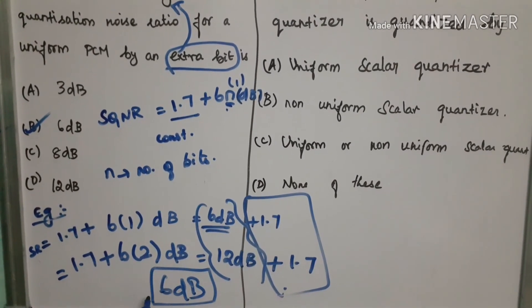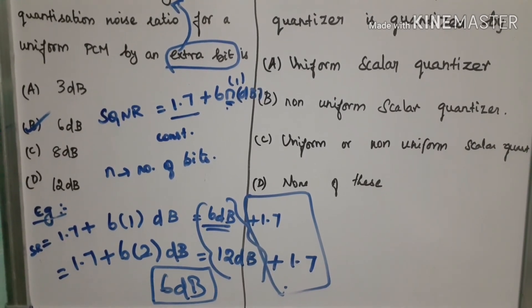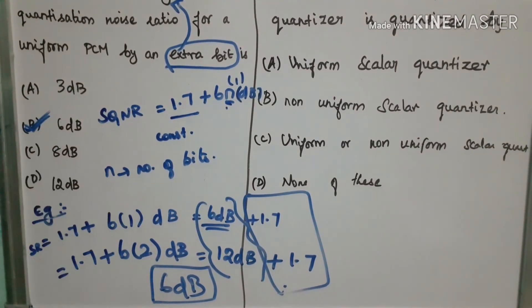This is the increase in SQNR. So option B is the right option 6 dB.